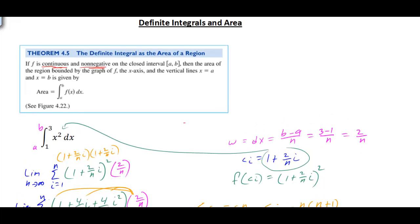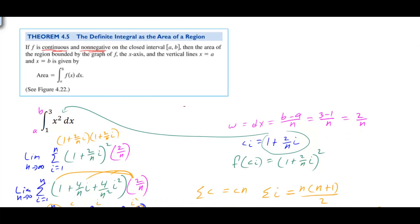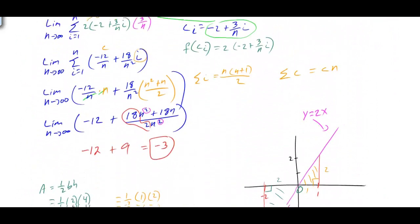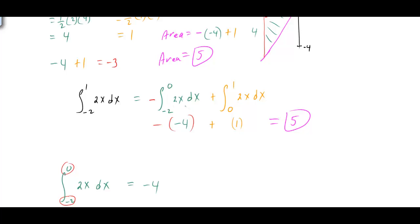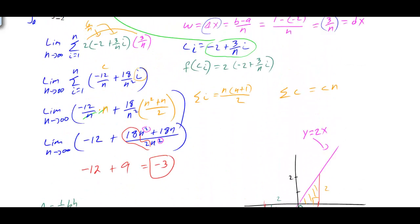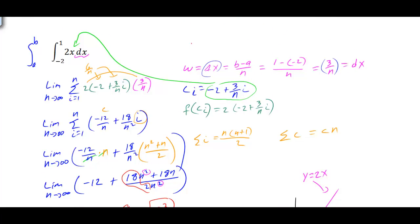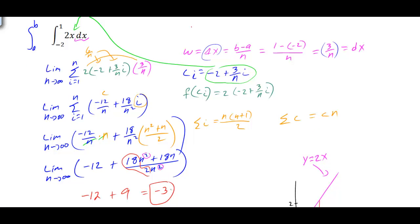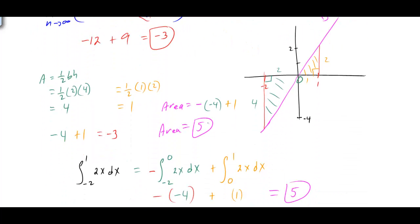Just keep in mind the function must be continuous and on a non-negative closed interval. If it is negative, we have to make a correction by splitting the integral where it crosses the x-axis. Finally, I want to stress: if a problem says to evaluate the integral from negative 2 to 1 of 2x dx, the answer is negative 3. But if it asks to calculate the area, the answer is 5. Not every integral is asking for area, so a negative answer when evaluating an integral is perfectly fine.